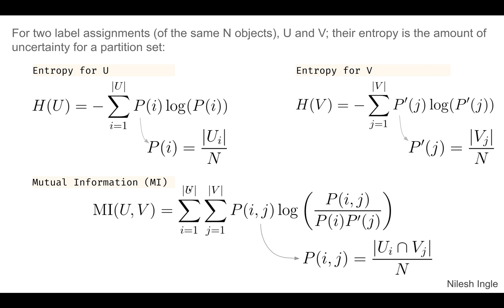Mutual information uses ideas from physics — specifically entropy — though we won't be discussing entropy in detail here. Mutual information can be explained in terms of entropy, which comes from physics and is applied in information theory. Looking at the entropy for u, the idea is: if we have data points from two different labels mixed together, the entropy will be higher; if the labels are well separated, the entropy will be lower.